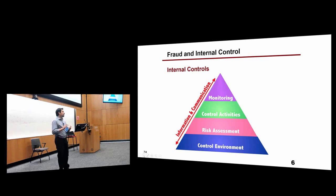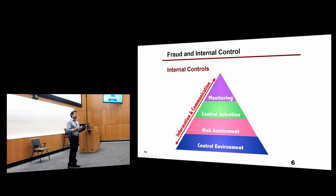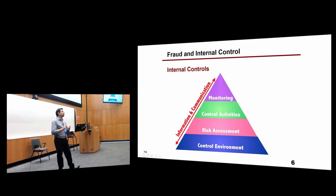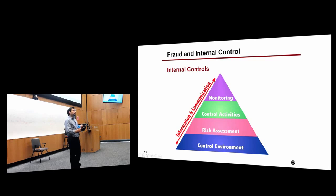Control violations happen very often — it's almost impossible to have a company with zero control violations. For example, employees may not be authorized to make a payment above $5,000 without manager approval. If you are the manager who both writes and approves the check, you could pay yourself or your friend — because no one is monitoring your activities. One person prepares the check; another person approves it. This is segregation of duties.